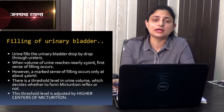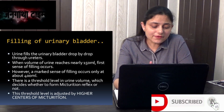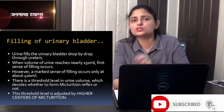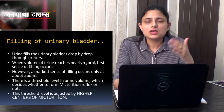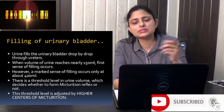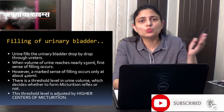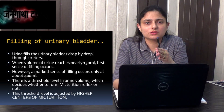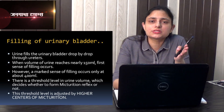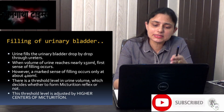The urinary bladder fills drop by drop. Every 10 to 20 seconds, there is a peristaltic wave in the ureters which brings urine from the kidneys to the urinary bladder. When there is about 150 ml of urine in the bladder, the first urge of feeling occurs. But once it is filled to 400 ml, the stretch receptors in the wall of the urinary bladder get stimulated, and at this point the micturition reflex is initiated.